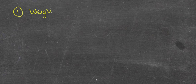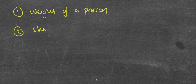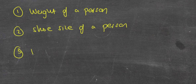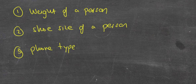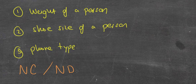So let's have a look at an example. I'm going to give you three types of data. We're going to give you the weight of a person, the shoe size of a person, and your phone type. If you have to label these as either numerical continuous, numerical discrete, or categorical.